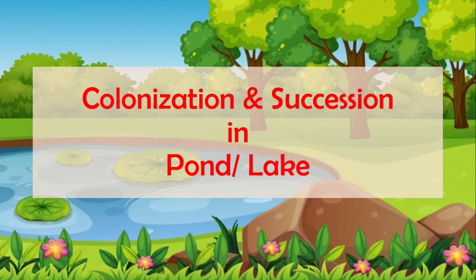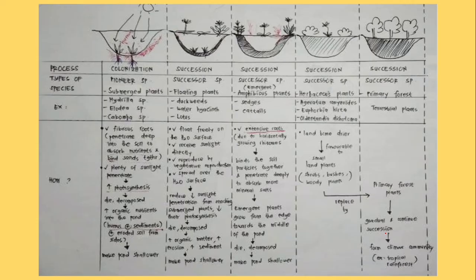We proceed with the colonization and succession in the lake or the pond. We start with the colonization process by pioneer species, submerged plant. The plants that sit in the water, submerged in the water, so submerged plant.